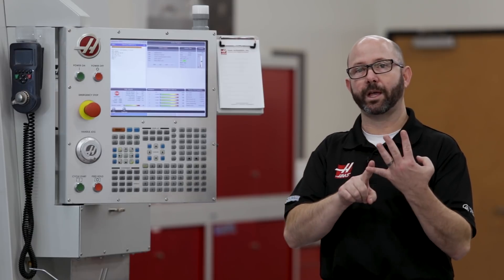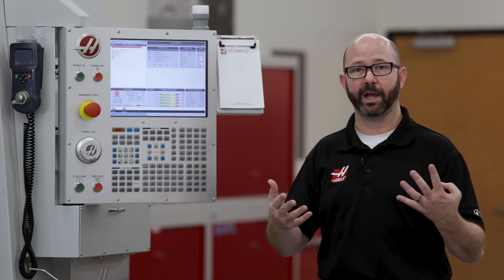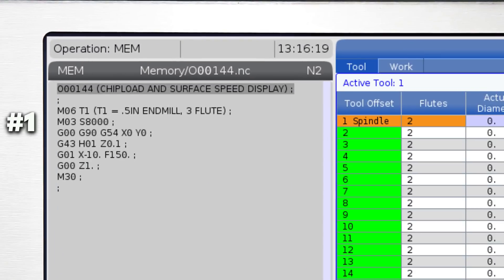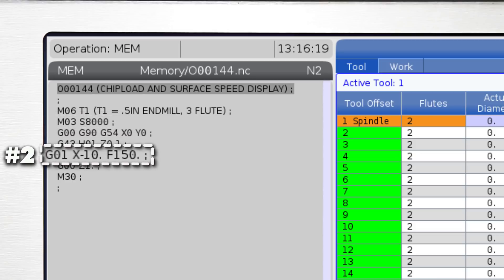The control needs four things from us in order to properly display our chip load and surface speed. Number one, it needs to know our RPM, and it has this. That's the S code in our program. Number two, it needs to know our feed rate, and it has that. That's the F code in our program.